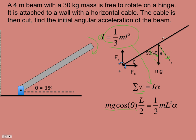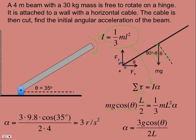Solving for alpha with some simplification, the L goes and we get 3g cosine theta over 2L. We can put in L equals 4 and theta is 35 degrees, and we get 3 radians per second squared.